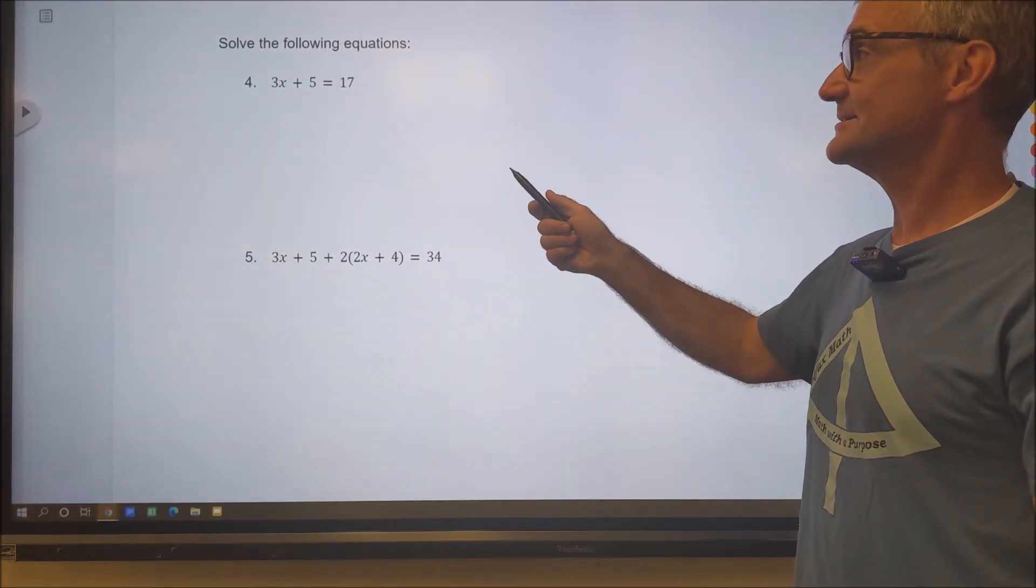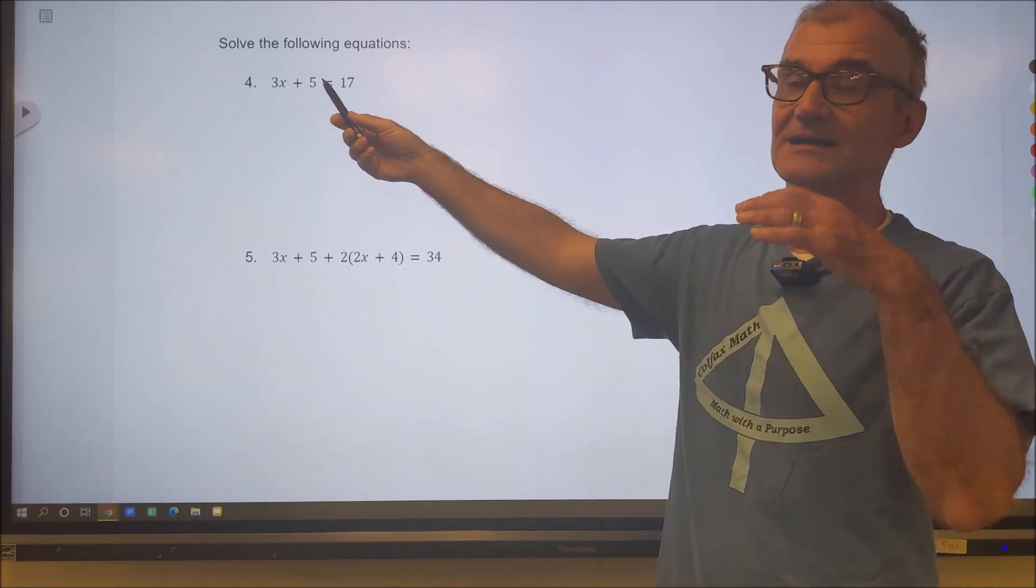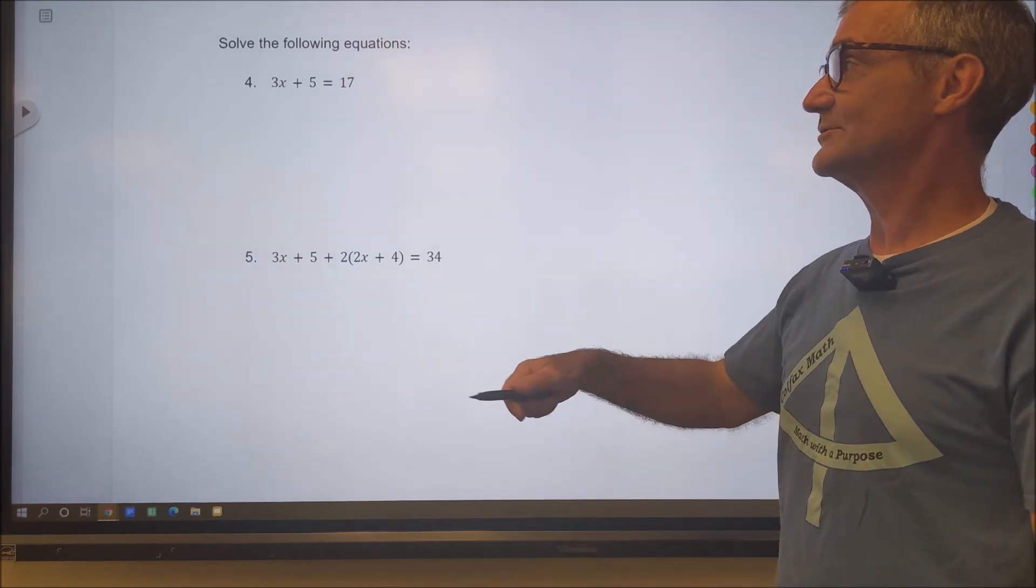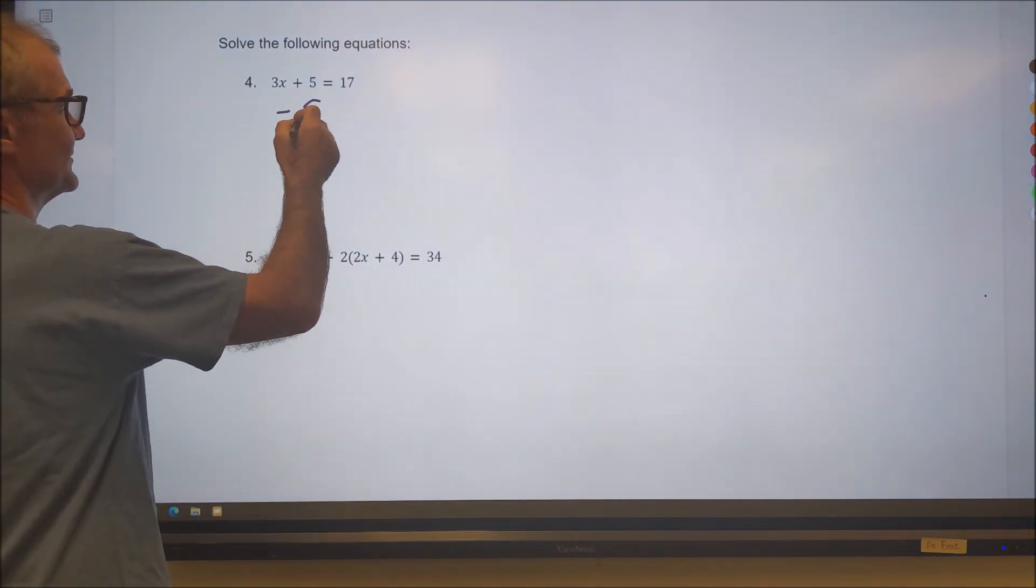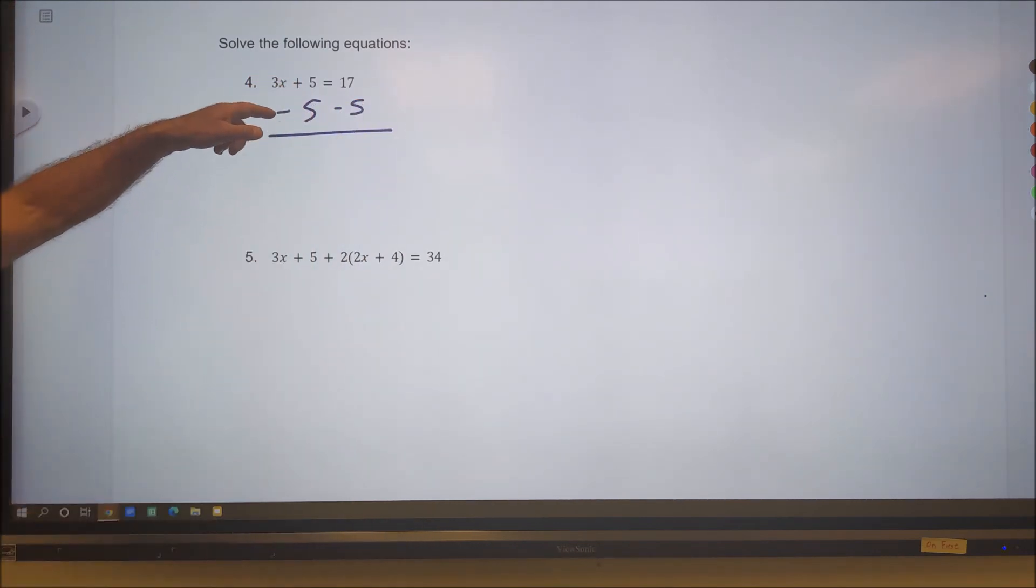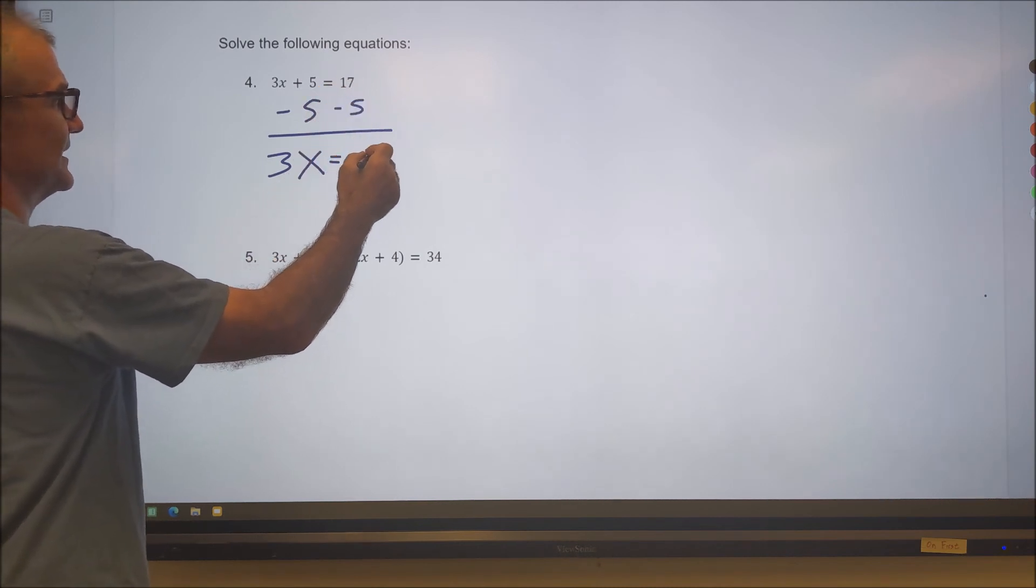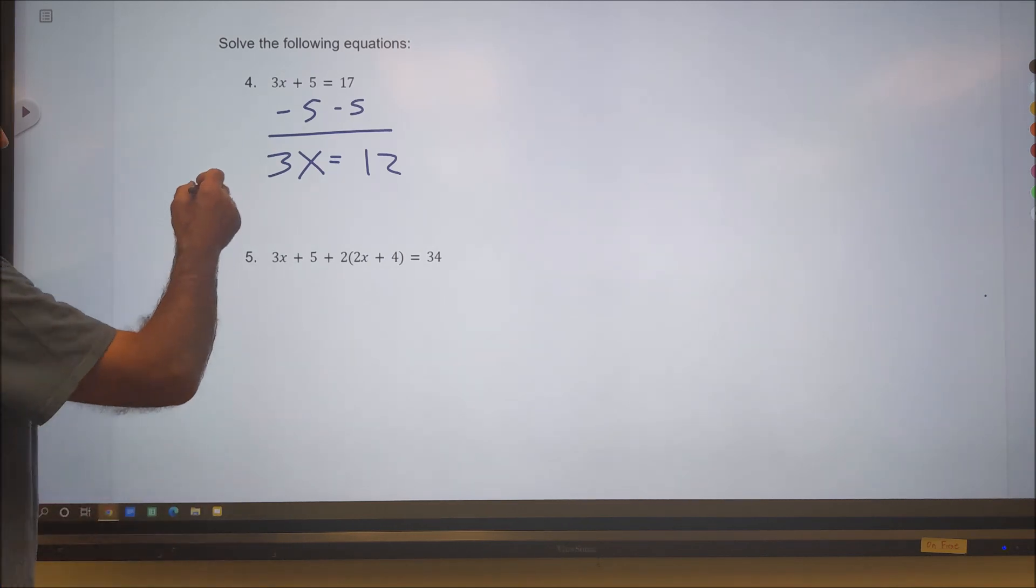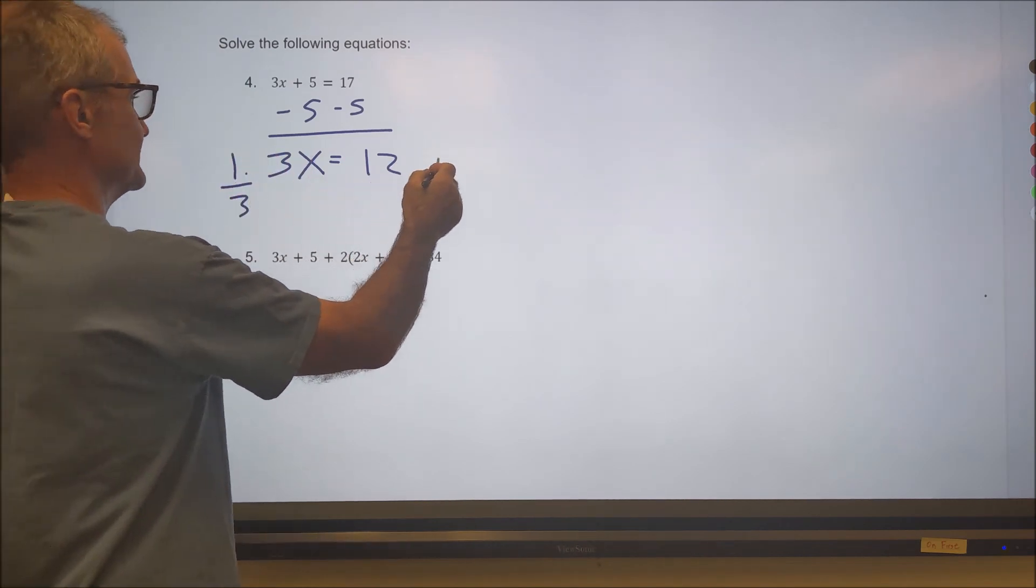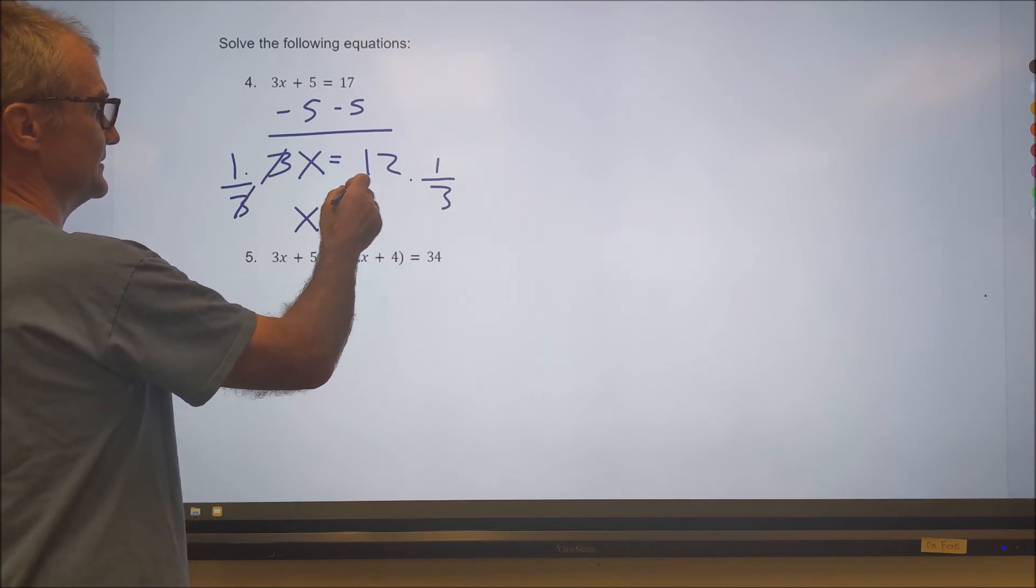Two more equations. Remember with an equation, I have an equal sign. I have my variable x. I need to isolate that variable and get it by itself. I'm going to do the reverse operation. So the first thing I'm going to do here to get that 3x by itself is subtract 5 from both sides. So 3x plus 0 is just 3x. And then 17 minus 5 is 12. So I have 3x is equal to 12. I can multiply by the multiplicative inverse, 1 third. 1 third times 3 is equal to 1. If I do that to the left, I also have to do it to the right. x is by itself. 12 times 1 third is equal to 4. There's my value of x.